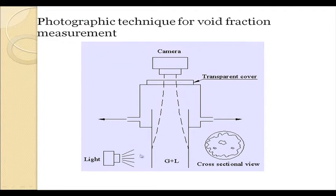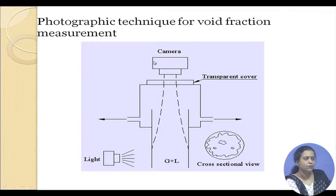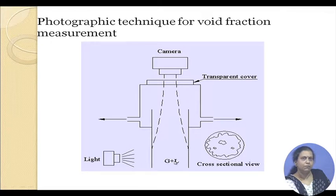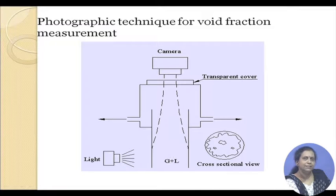Some particular lighting arrangements that may be helpful in capturing the cross-sectional average distribution of voids are shown here, where the camera is mounted on top and the light comes from the side - though of course these things are much more easily said than done.